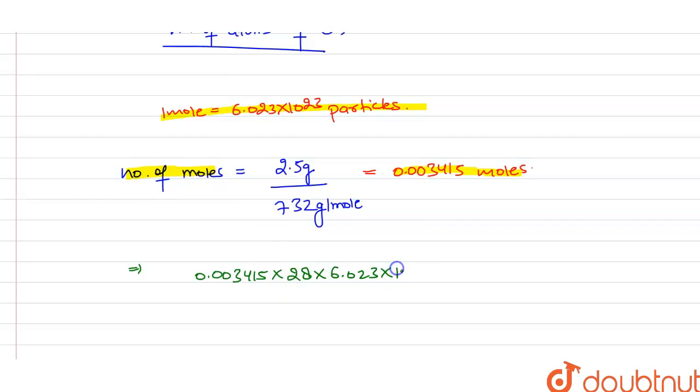So on solving it, what we will get? We will get 5.76 multiplied by 10 to the power 22 atoms of oxygen present in 2.5 gram, or you can say that 0.003415 moles of the salt.